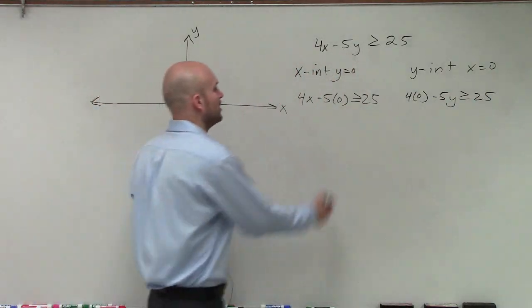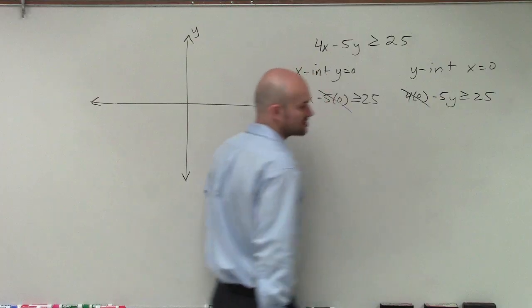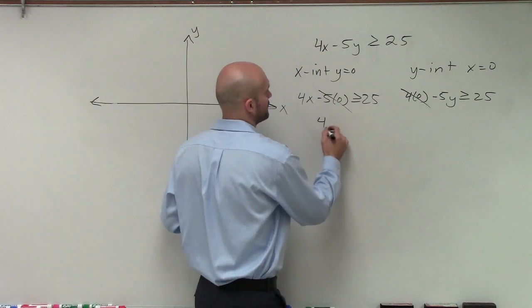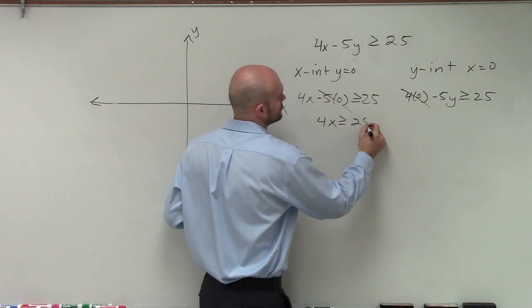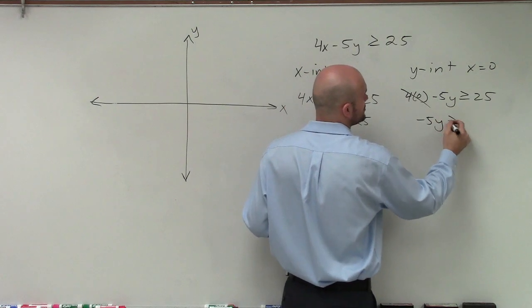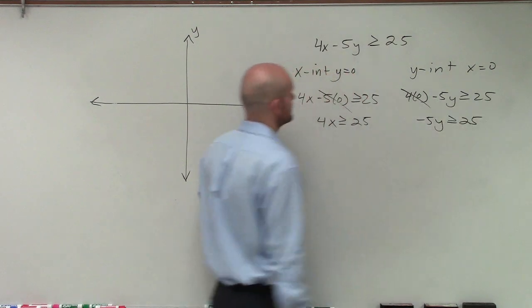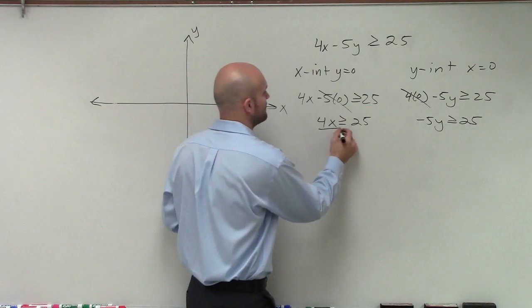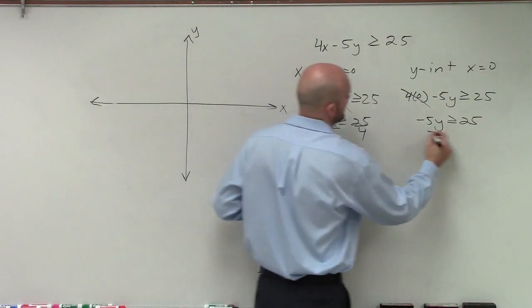Now I simply just need to solve these. Well, any number multiplied by 0 is just going to be 0. So therefore, I have 4x is greater than or equal to 25. And here, I have negative 5y is greater than or equal to 25. So now, I solve by dividing by 4, and here, divide by negative 5.